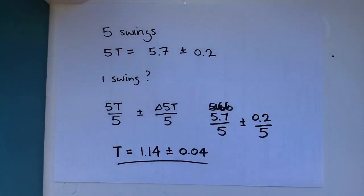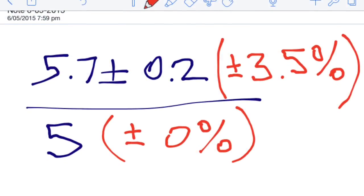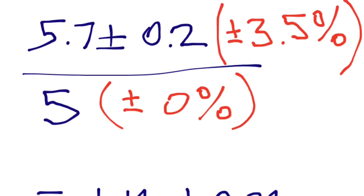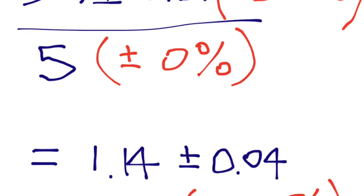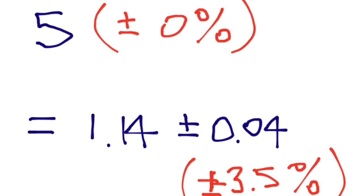When you divide 5.7 by 5, you add the percentage uncertainty of 5.7 and the percentage uncertainty of 5. But 5 is a precisely known number, so it has 0% uncertainty.